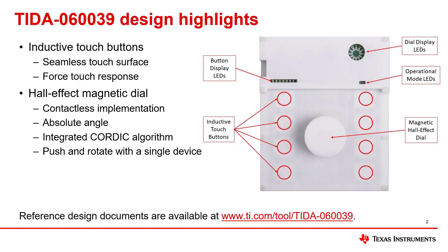There are three groups of LEDs on this design. The first group is used to display the button states, and how these LEDs display the button information changes based on the operational mode. To see the current operational mode, the two LEDs on the right can be used and will always correlate to the current operational mode. The last group of LEDs displays the position of the magnetic dial as one of 12 angle increments.